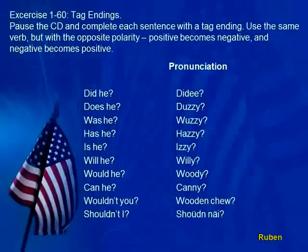Exercise 160, Tag Endings. Pause the CD and complete each sentence with the tag ending. Use the same verb but with the opposite polarity. Positive becomes negative and negative becomes positive. Then repeat after me. Check the answer key beginning on page 193.